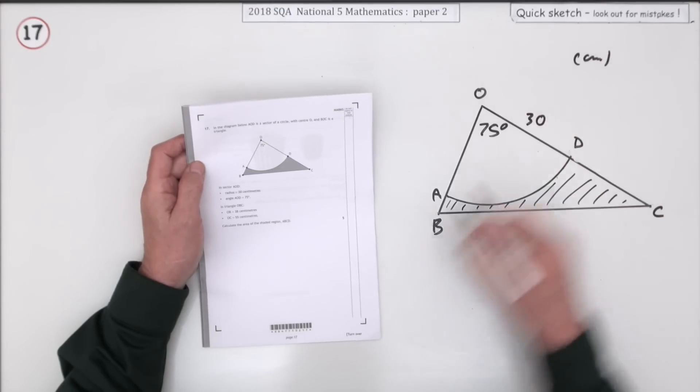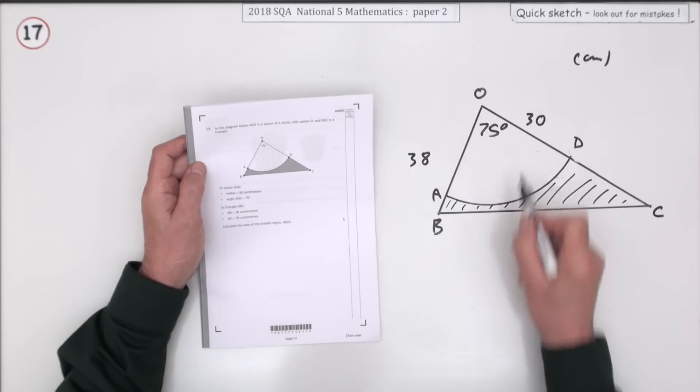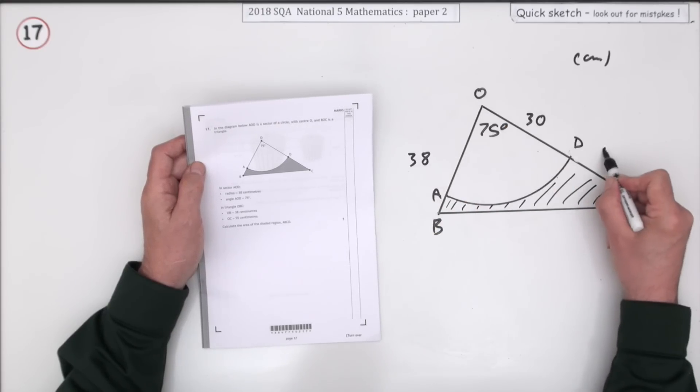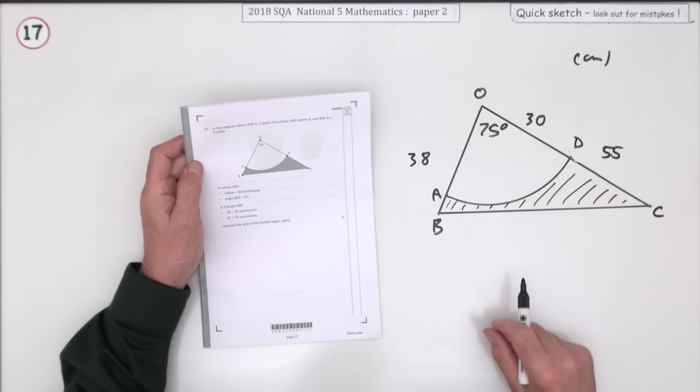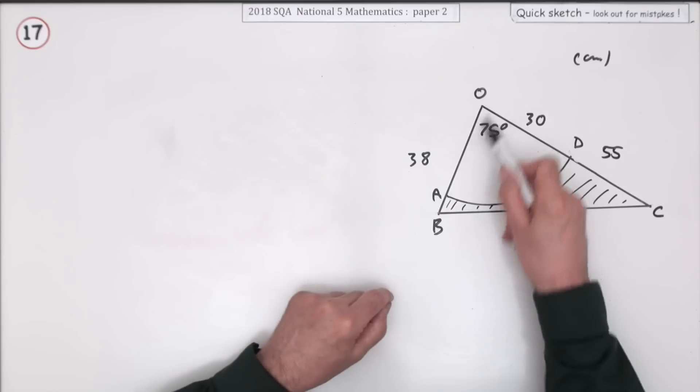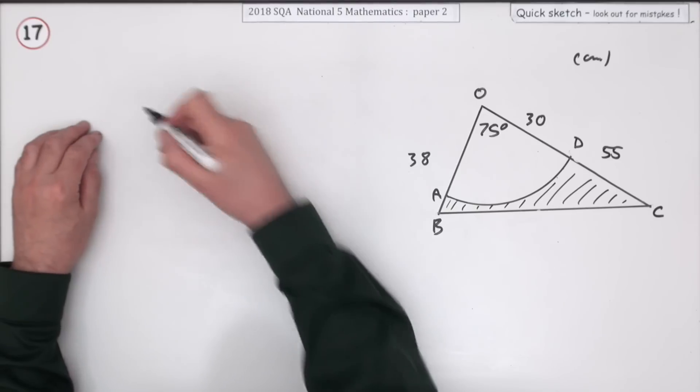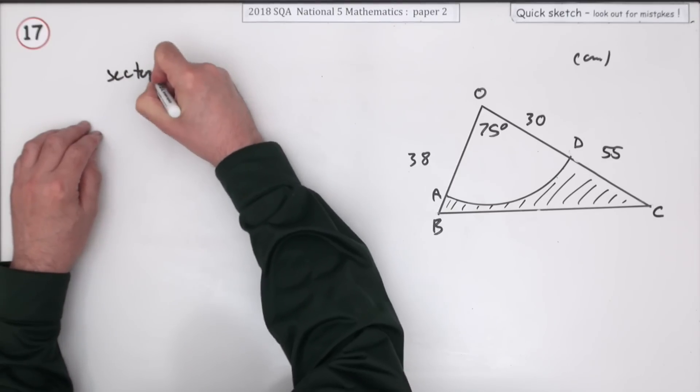The angle is 75 degrees, the radius of the circle is 30 centimeters, the side OB is 38, and the side OC is 55. The area of the shaded region is the whole triangle minus the sector.